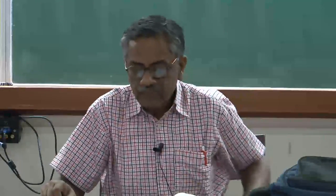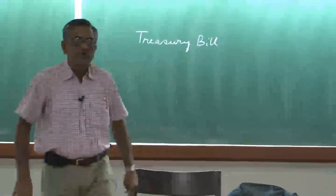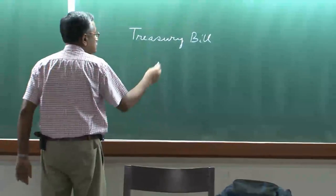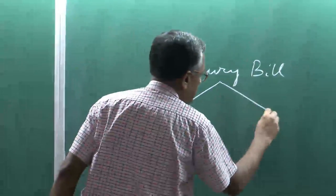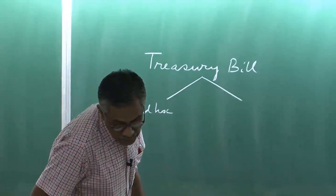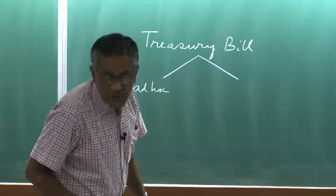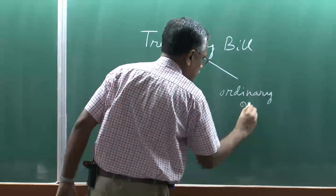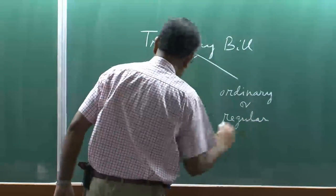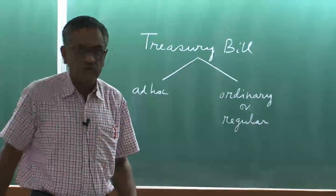Now, historically — which is not true anymore as far as my understanding goes — there have been two types of treasury bills the Government of India has been selling: one called ad hoc treasury bills, and the other called ordinary or regular treasury bills.